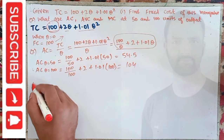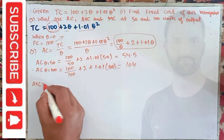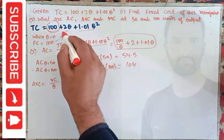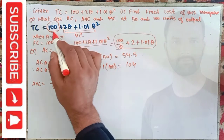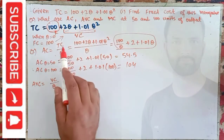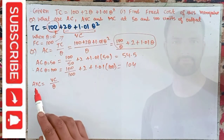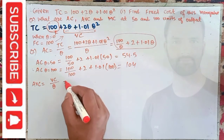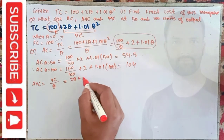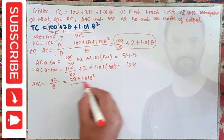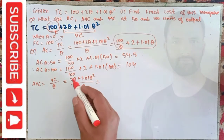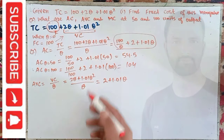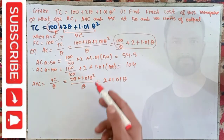Now, what is the average variable cost? Average variable cost is simply variable cost divided by Q. The variable cost portion is the last two terms: 2Q + 1.01Q². Dividing by Q gives us 2 + 1.01Q, since the Q terms cancel. So AVC = 2 + 1.01Q.